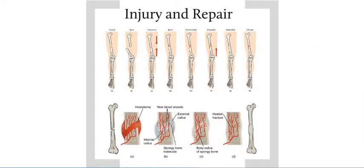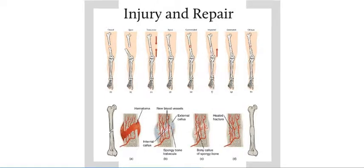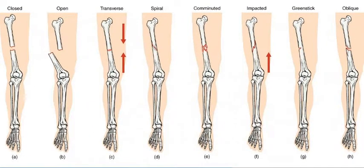We also want to consider how broken bones repair themselves — it's really another type of growth process within an already mature bone that has to repair damage to the tissue. This figure demonstrates the general classification of different types of bone fractures; it's not a complete list, but gives a good idea of how different things happen. A closed fracture is just a fracture where the bone remains within place, while an open fracture breaks through soft tissue, usually the skin — it's also called a compound fracture.